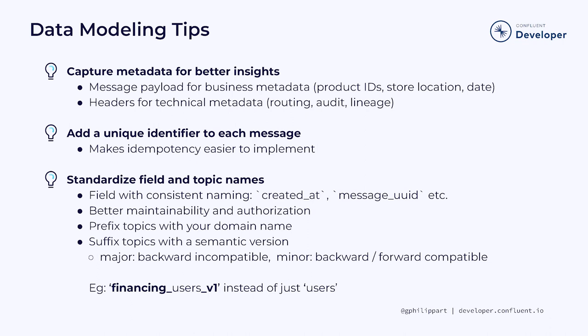Another key aspect is implementing semantic versioning for your data schemas. When you make a change that's backward incompatible, you should increment the major version number. Minor version changes, on the other hand, should be both backward and forward compatible. By using this versioning system, you can clearly communicate the nature of the changes made to the structure of your data.